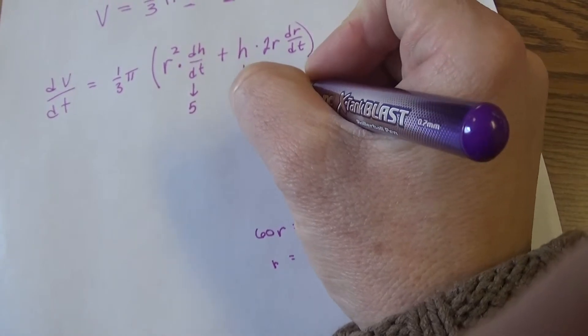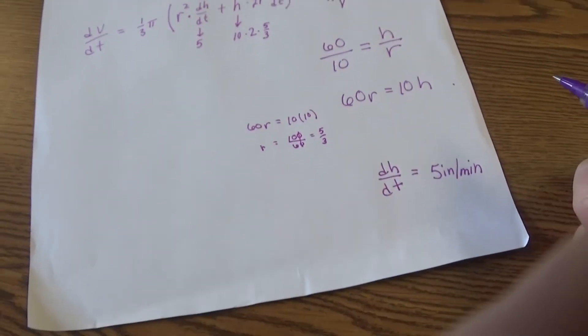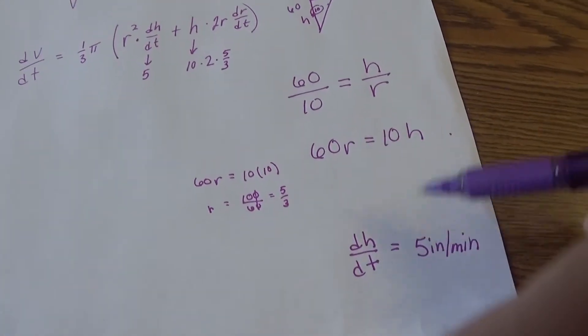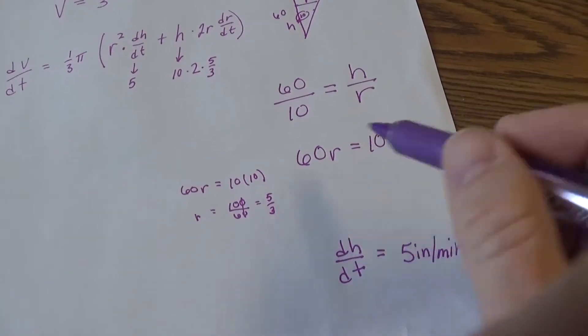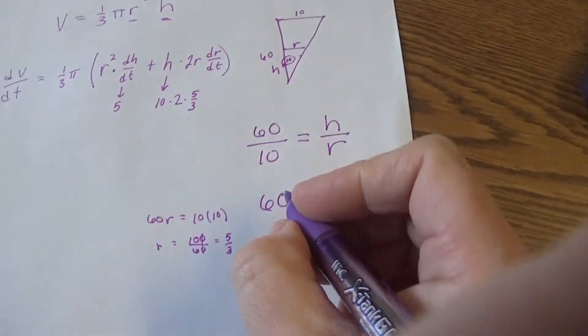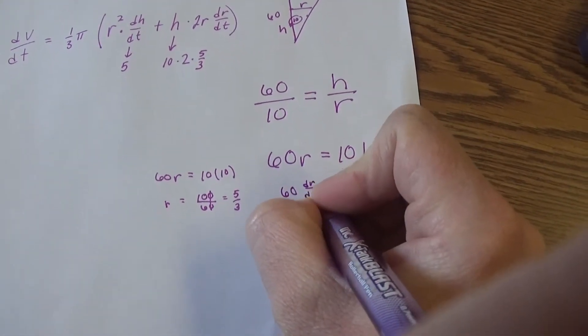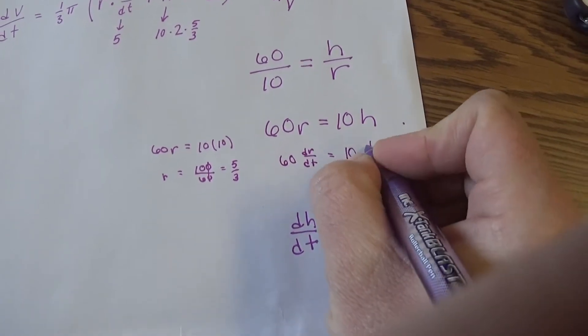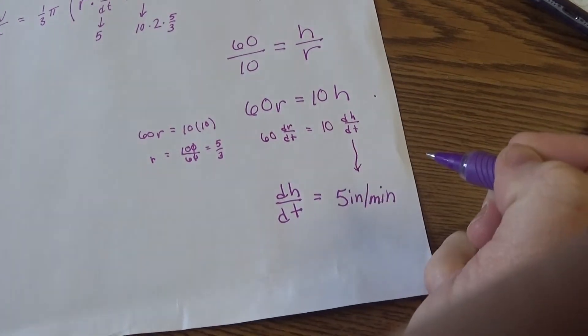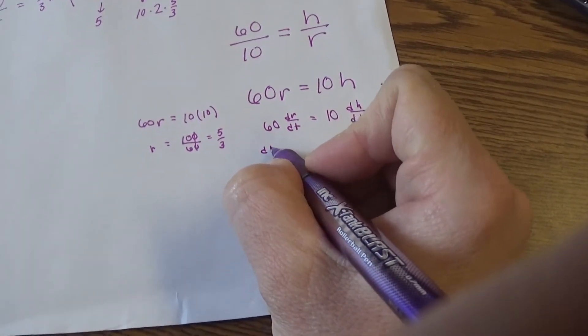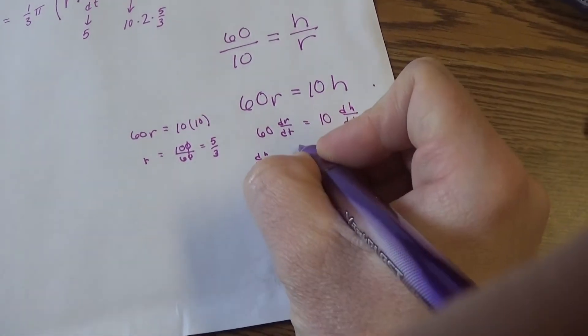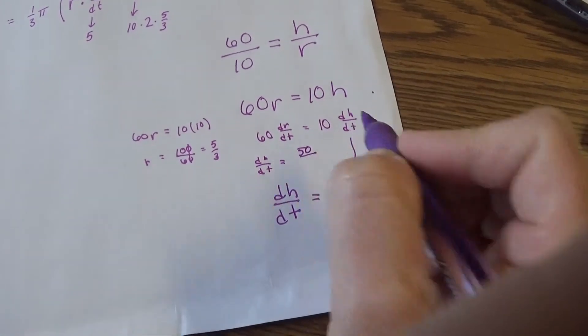I've got 60r equals 10h. Well, h is 10 right now, so r equals 100 over 60, which is 10/6 or 5/3. So in place of r I'm going to write 5/3. What about dr/dt? Well, I know dh/dt. Could I come up with some kind of relationship here? I'm going to go ahead and differentiate this expression.